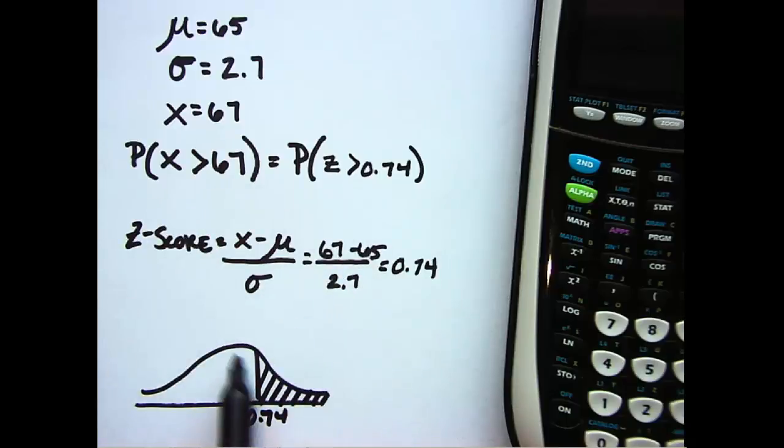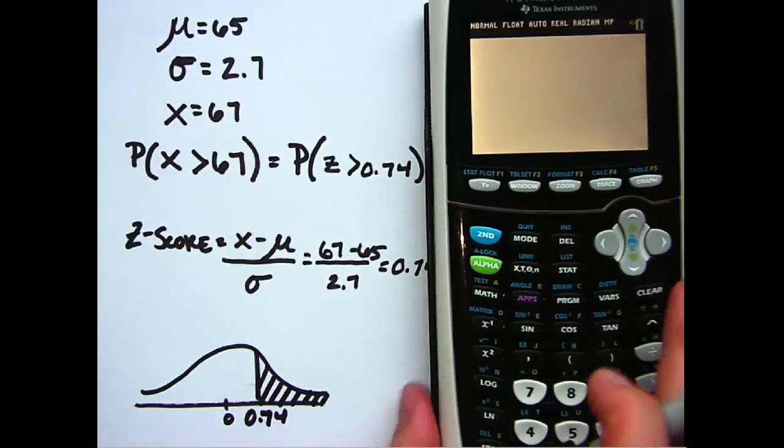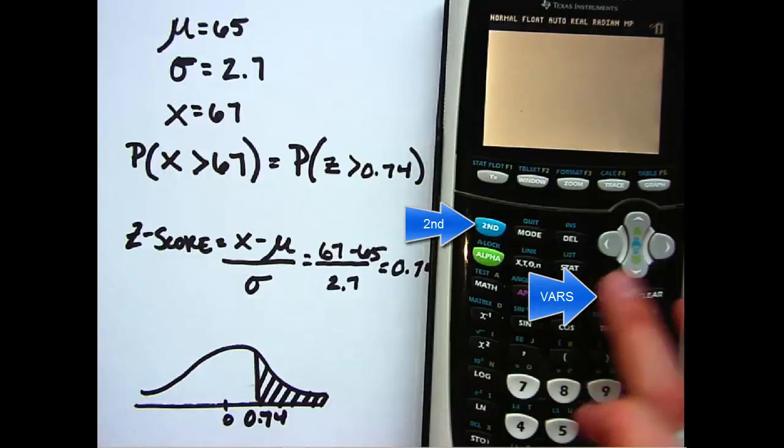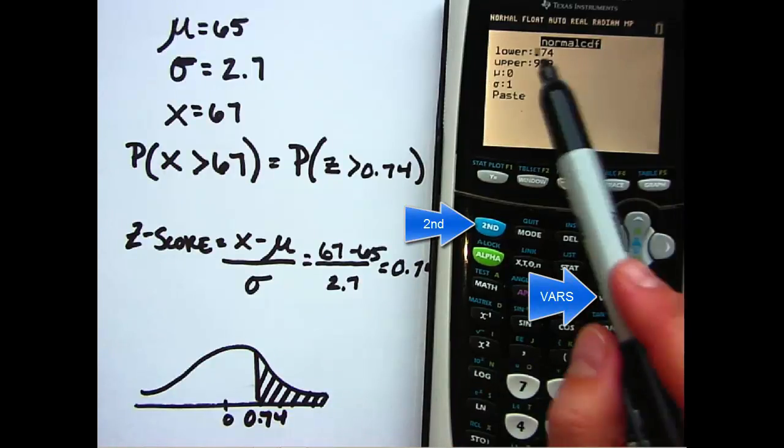pointing out up here. So in order to find this area above 0.74, I'm going to use the calculators normalcdf function. You would go second and then vars, you want normalcdf, and you want the